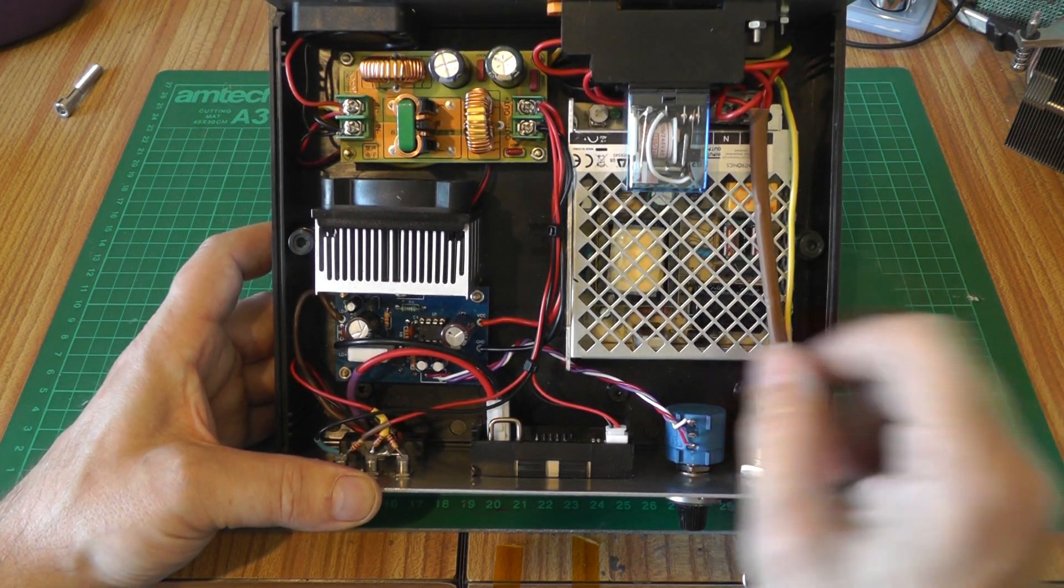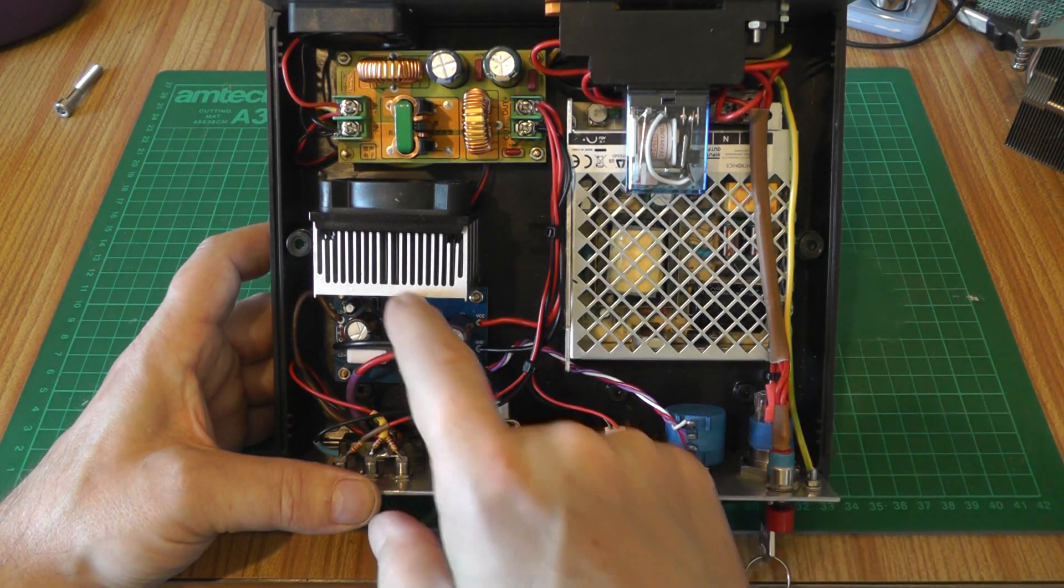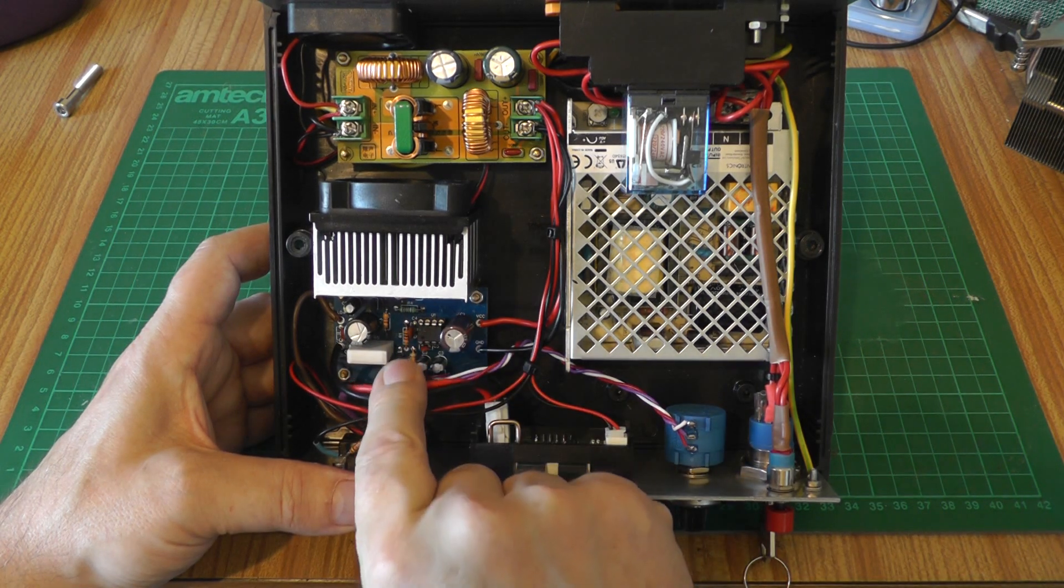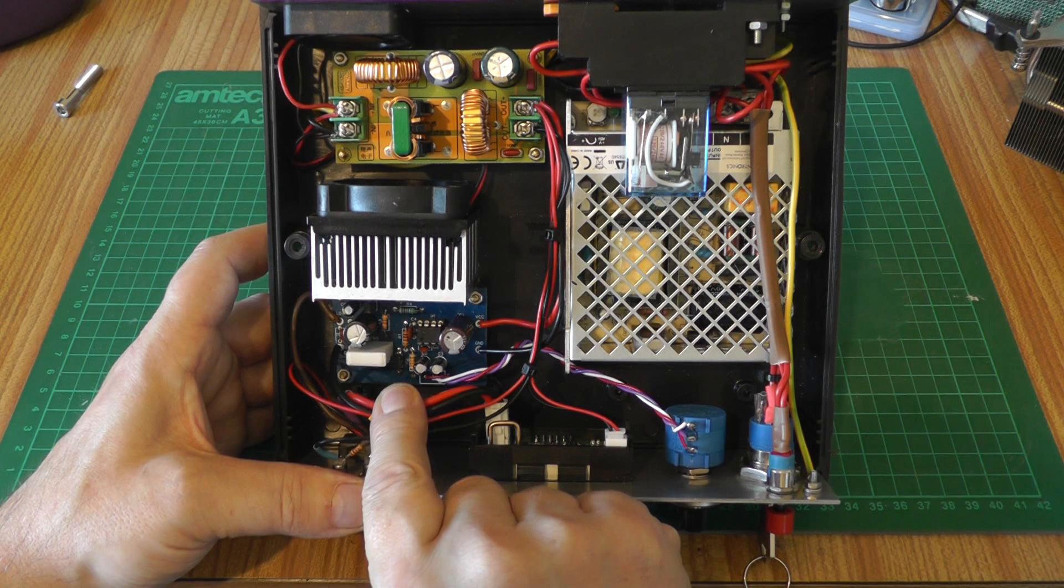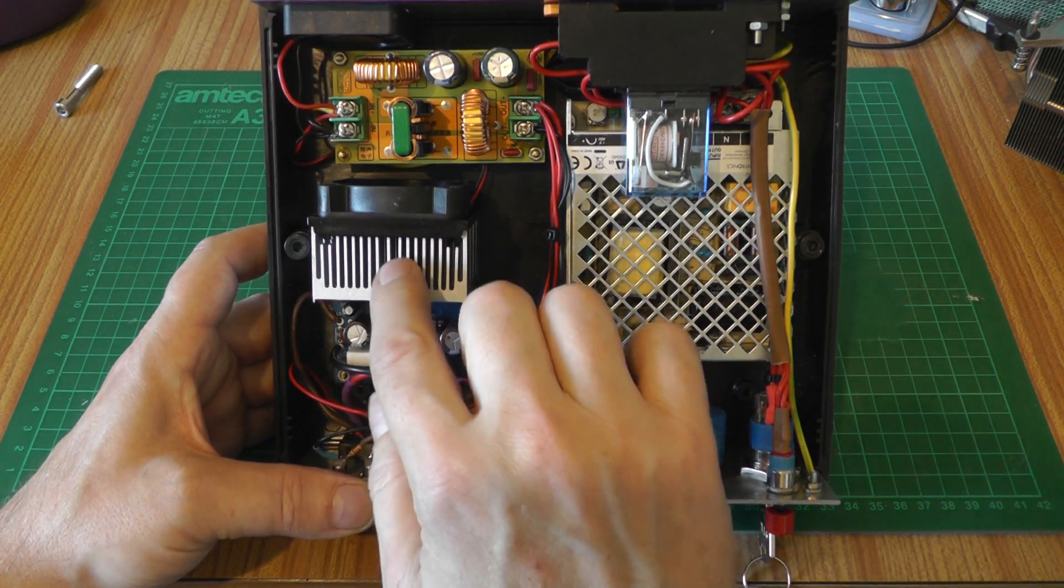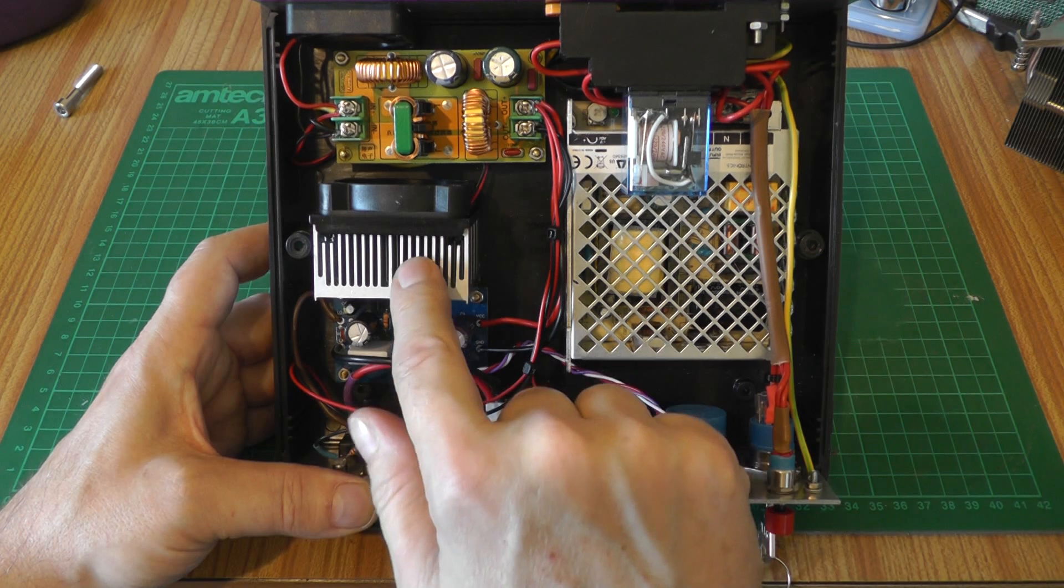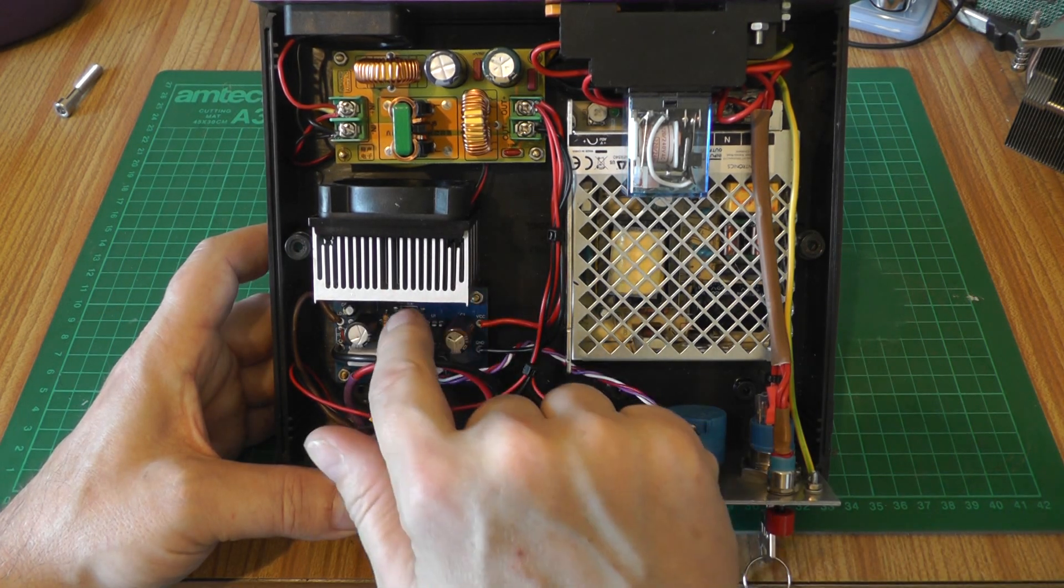Then we've got the PCB mounted down here that we saw in EasyEDA there on the computer. Excellent. The heat sink for this, I've actually just used an old computer heat sink, but honestly it doesn't need a heat sink half as big as this.